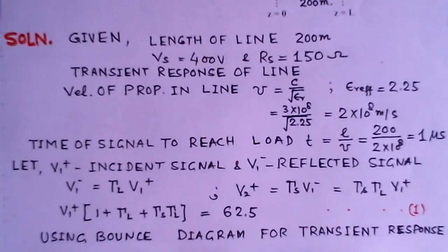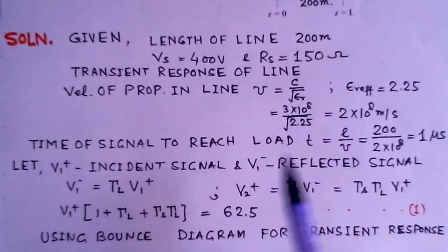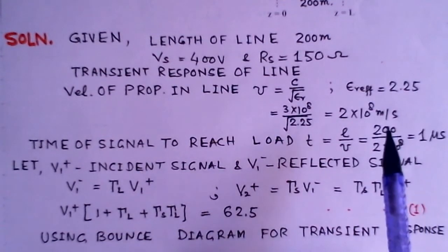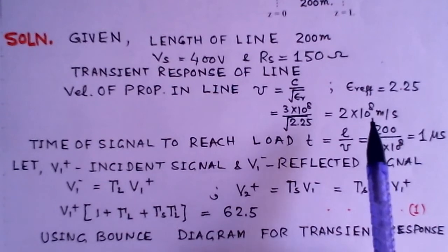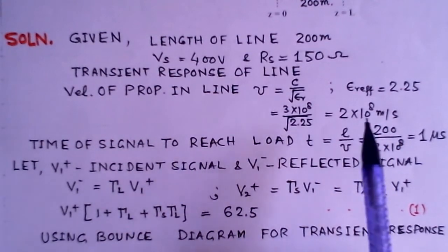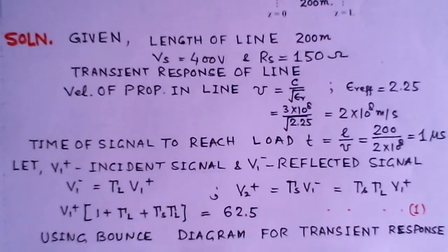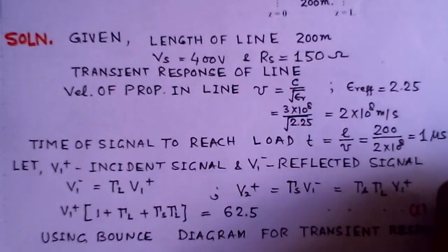We use the bounce diagram. That means we have seen the signal traversing from the source to the load, coming back, reflected from the load, coming to the source and again reflected from the source towards the load. So you can determine this by bounce analysis and we can see further on this.